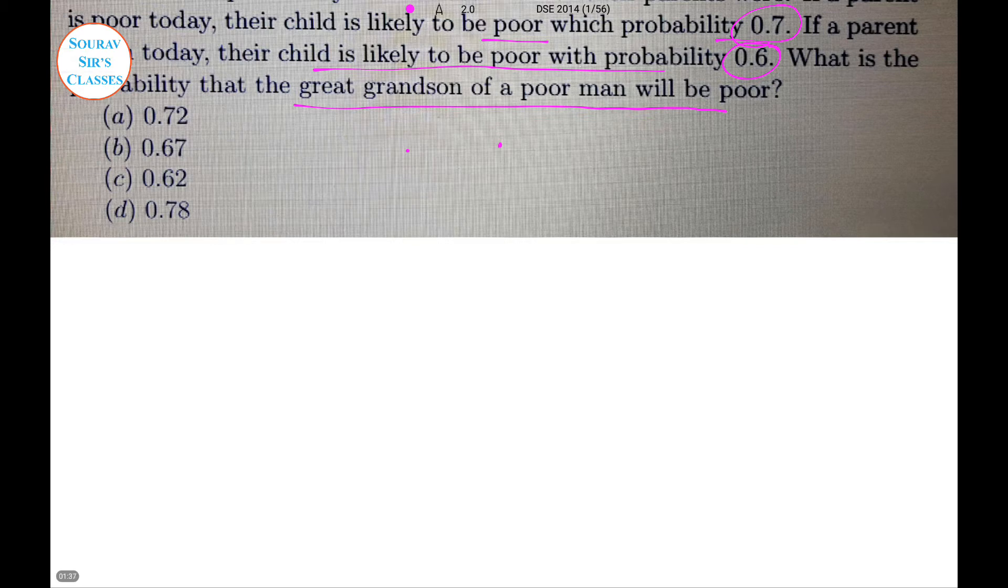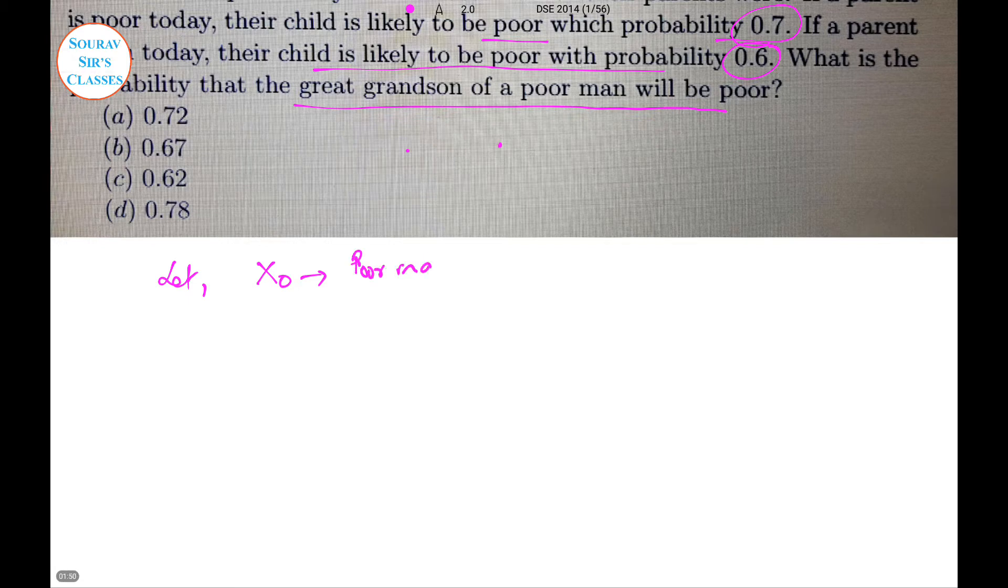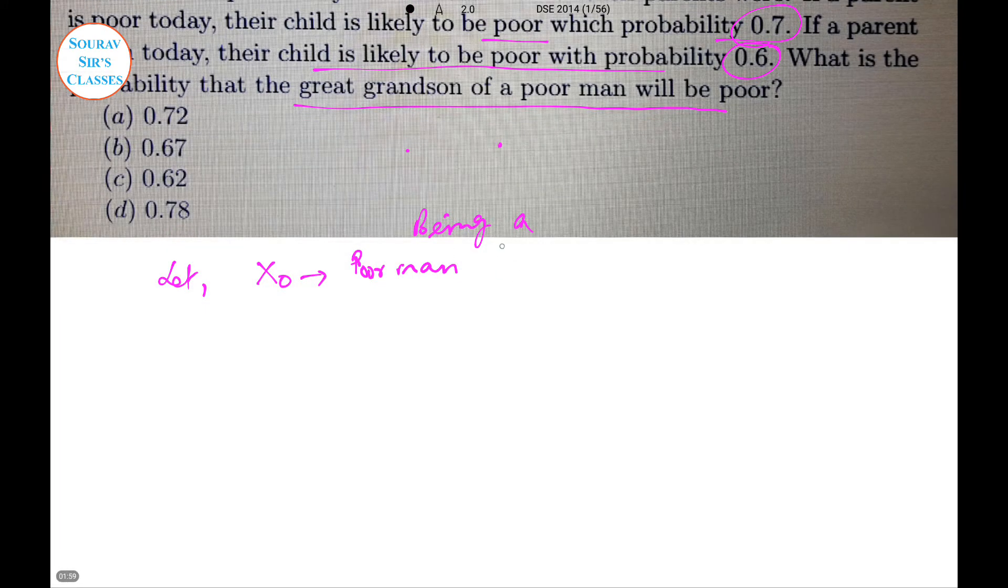Let X0 equal to the event of being a poor man in the present generation, X1 in the next generation, X2, and so on. The great-grandson is X3. We are asked to find the probability of X3 given that X0, the first great-grandfather was a poor man.